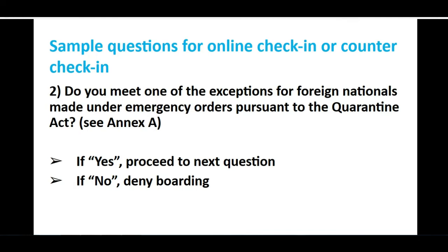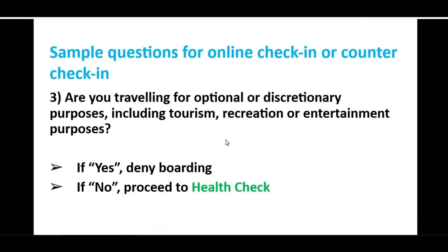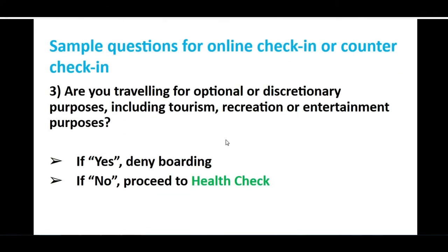Assuming you are a foreign national, a COPR holder, and you are allowed in the exceptional or essential category to travel to Canada, the next question is: are you traveling for optional or discretionary purposes, including tourism, recreation, or entertainment? If you say yes, you will be denied. Obviously, as a COPR holder going for permanent settlement in Canada, we select no. By selecting no, you will be permitted for health checking.